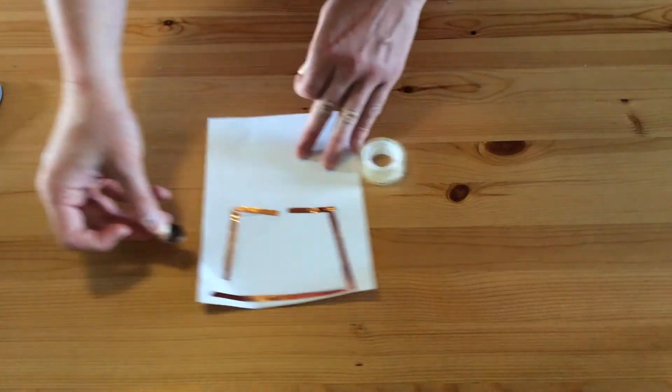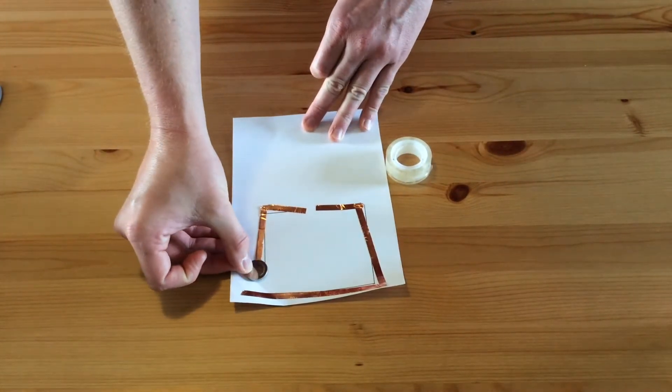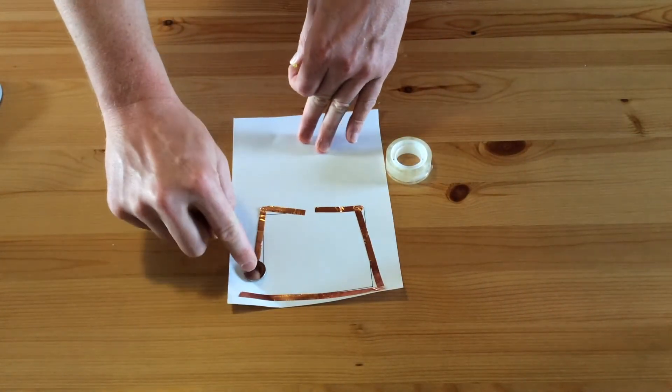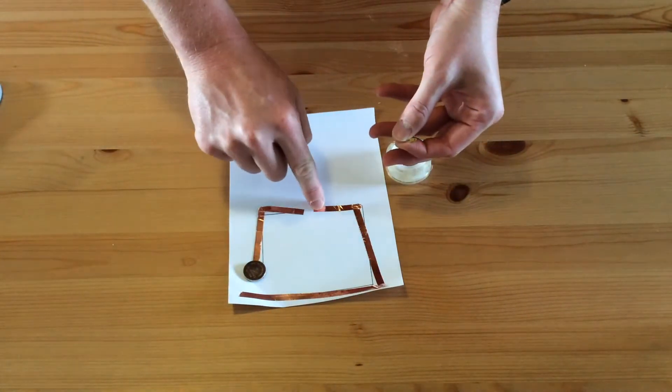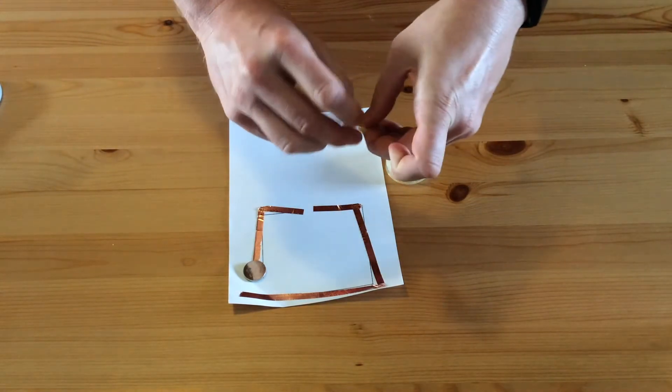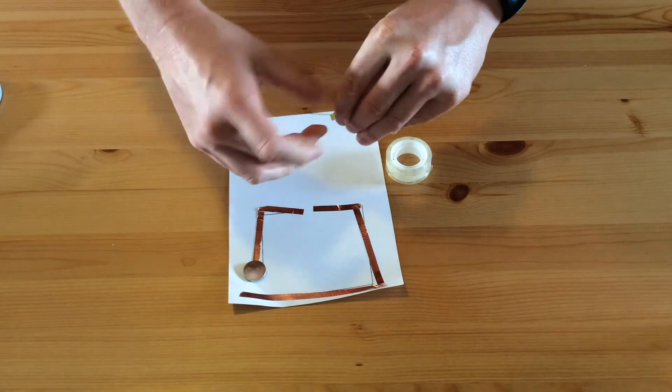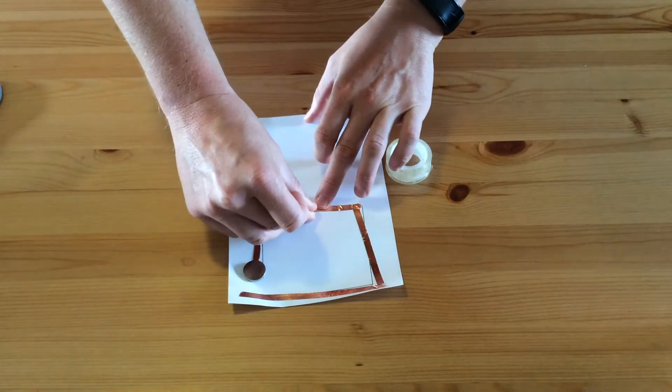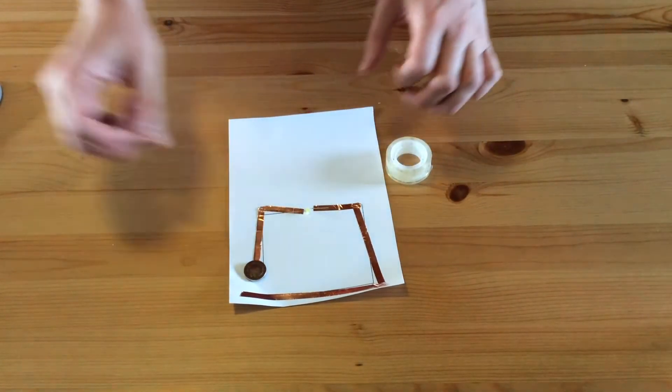If I put my coin cell battery down like this, this bit's going to be touching the top, so the long bit should be touching here. So I'm going to unfold, or fold my light. And I'm going to place it there so it's across that gap.